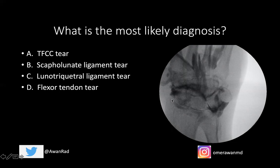What we should see is contrast only in the proximal carpal row or the radiocarpal joint. But what we see instead is contrast in the mid-carpal row — the space between the scaphoid, lunate, triquetrum, pisiform, and the trapezium, trapezoid, capitate, hamate. The proximal carpal row is right here between the radius and the proximal carpal bones: the scaphoid, lunate, and triquetrum.